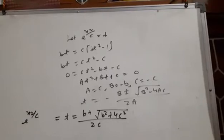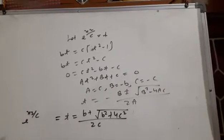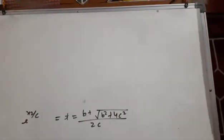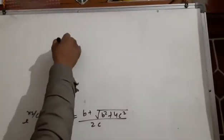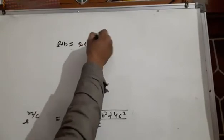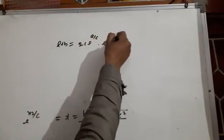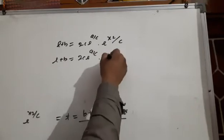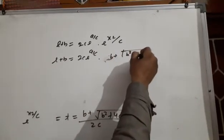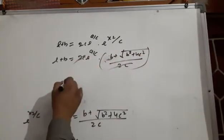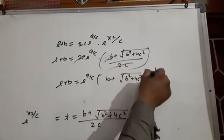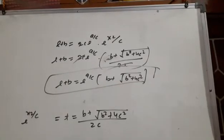Solving the quadratic: t equal to [b plus or minus √(b² + 4c²)] / (2c). Taking only positive values, t equal to [b plus √(b² + 4c²)] / (2c). Then putting x2/c back, and substituting into equation number 2: c·(l + b) equal to 2c·e^(a/c)·e^(x2/c). Substituting the value: l plus b equal to e^(a/c) times [b plus √(b² + 4c²)].